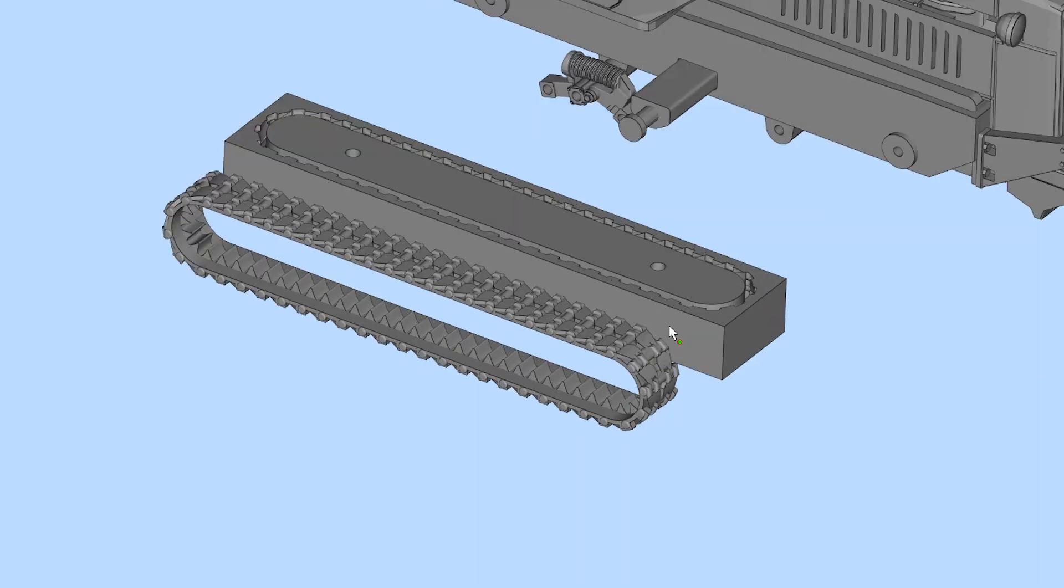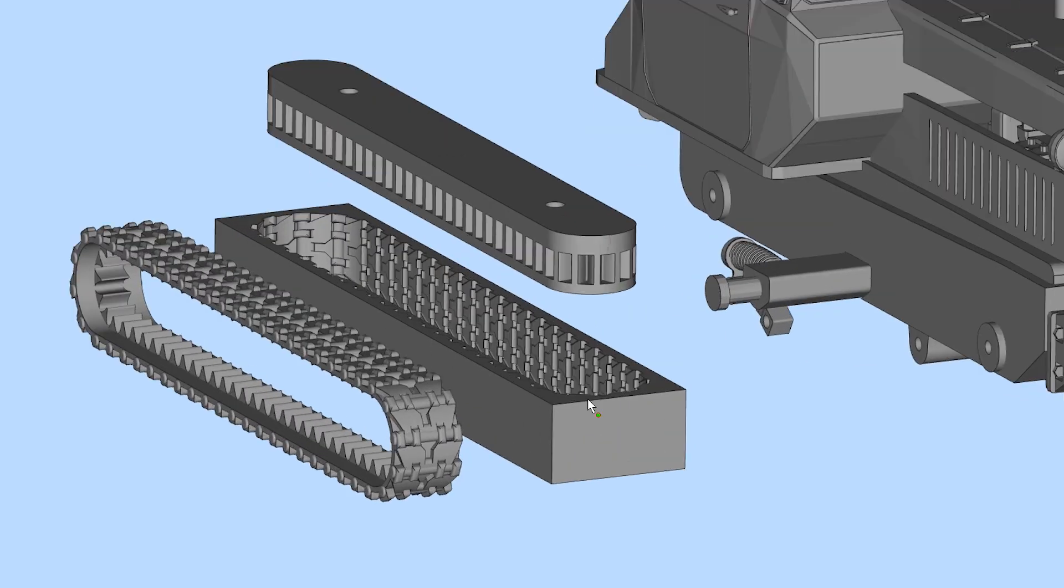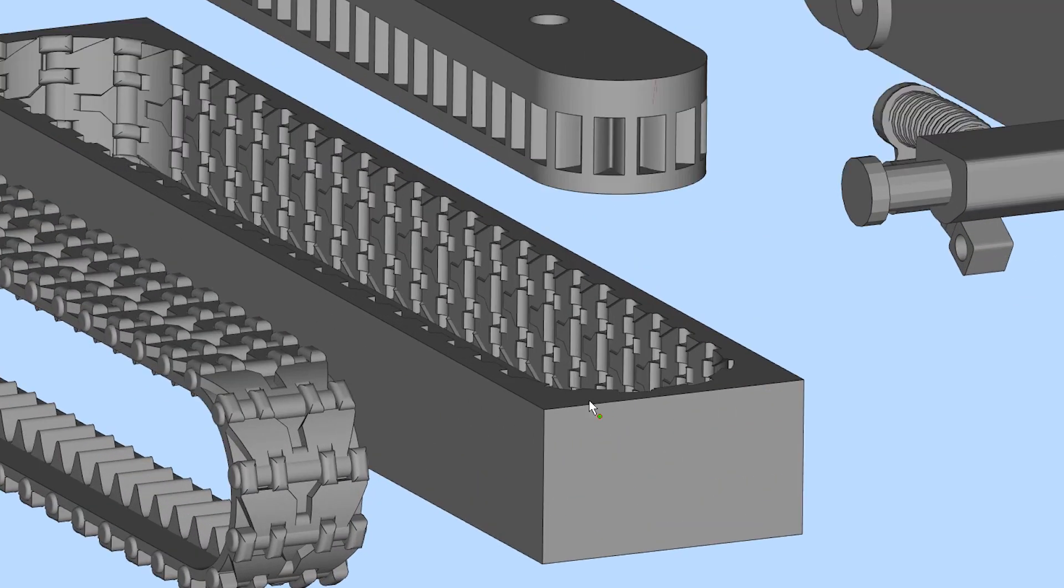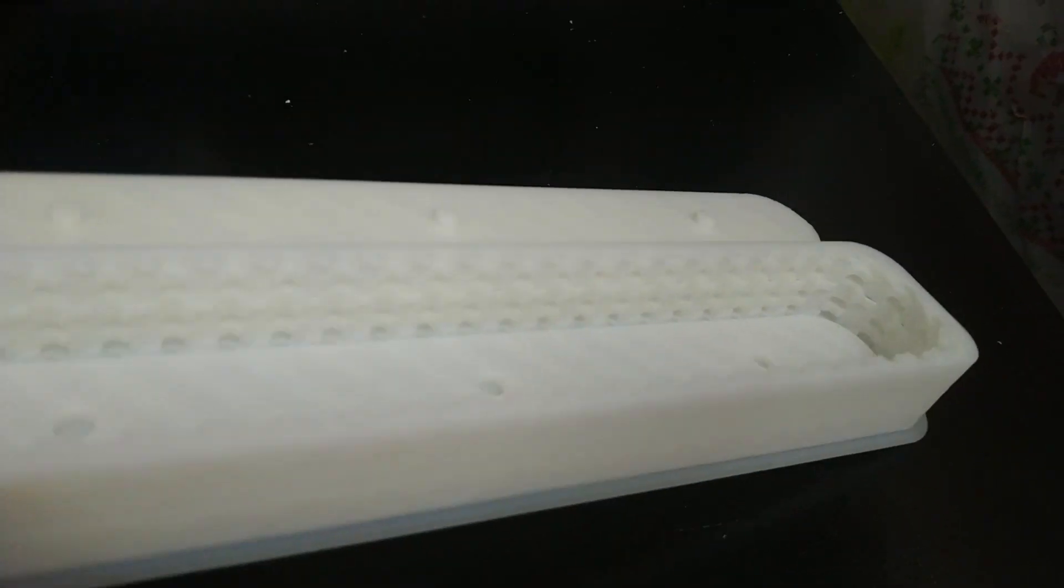Hi, continuing our experiments with the mold. In earlier videos on this channel you could see how the tires for the truck and off-road vehicle were made. Today I will try to make rubber tracks for an RC track-type tractor.